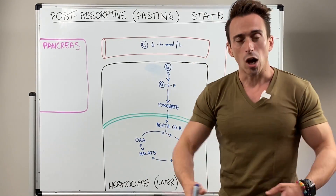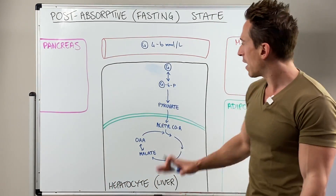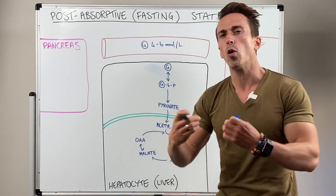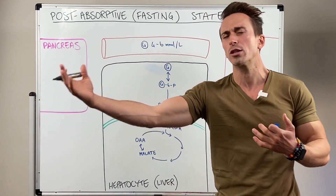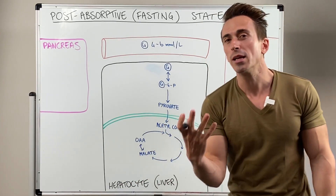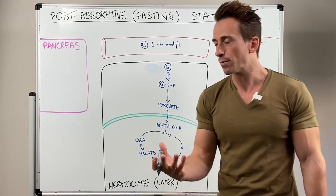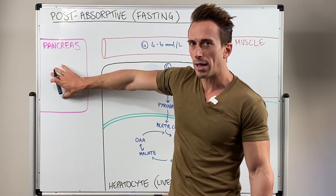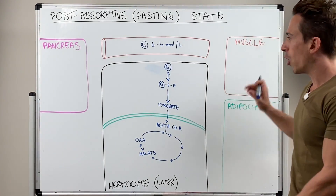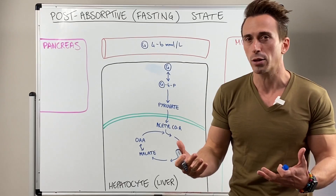I wake up in the morning as a 70 kilogram male. I have my liver, and in my liver we have cells called hepatocytes which do all the metabolic processing. There's also the mitochondria which plays a really important role of producing energy from our macronutrient substrates. We've got our pancreas which we need to talk about, and we've also got muscle tissue and adipose tissue. All of these organs and structures are playing a role in maintaining blood glucose levels.